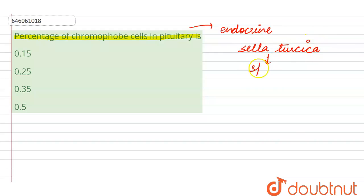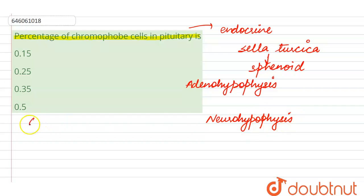So this is in the sphenoid bone of the skull and it has two major parts. It has adenohypophysis, that is the anterior side, whereas on the other side it has another part which is called neurohypophysis. When we talk about the cells in the pituitary, there are two types of cells: one are called the chromophils, whereas the other are called the chromophobes.